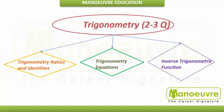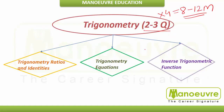For Trigonometry in MCA CET, you can expect two to three questions. Two to three questions times four marks each means you can expect around eight to twelve marks from the Trigonometry section.